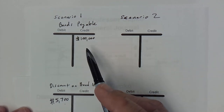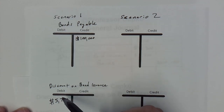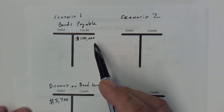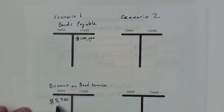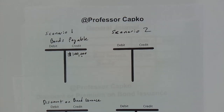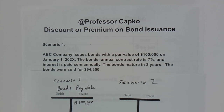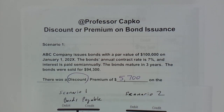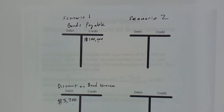What is known as the carrying cost or the book value — two different terms for the same thing — we would take the $100,000 and subtract out the $5,700. That gives us a carrying cost of $94,300, which of course equals the amount that we sold the bonds for. So that's how the T-accounts look.